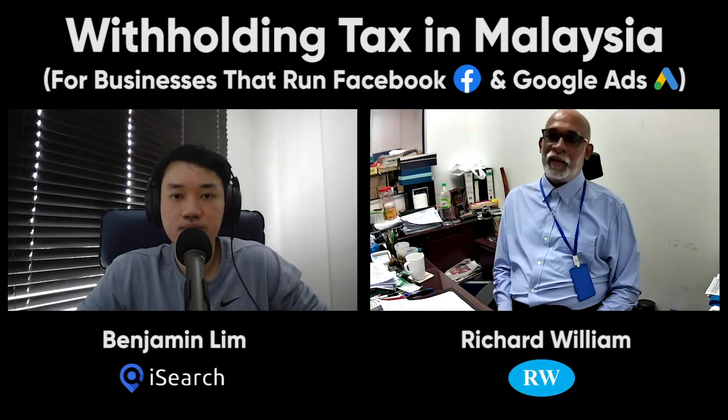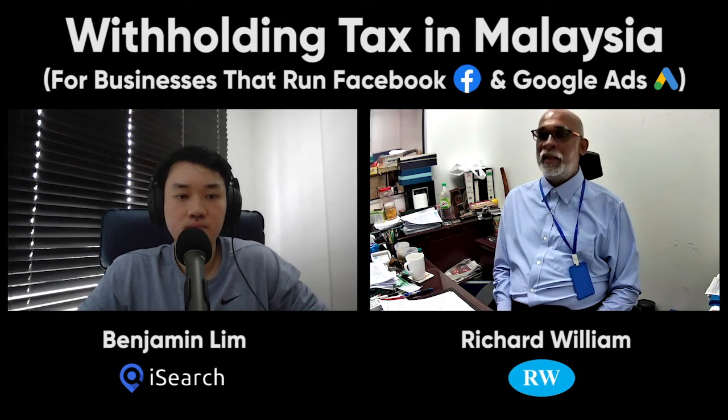My advice is that businesses really have to be aware. From my experience, many companies have not complied with this royalty withholding tax requirement, which the Inland Revenue has only recently enforced. Non-compliance subjects you to audit, and with IRB's data intelligence systems, once they investigate withholding tax, they will look into other areas of non-compliance too. They can get information from banks — if every month you're paying Facebook 10,000, the banks are obliged to inform the Inland Revenue Board, and IRB can trace all these payment patterns.